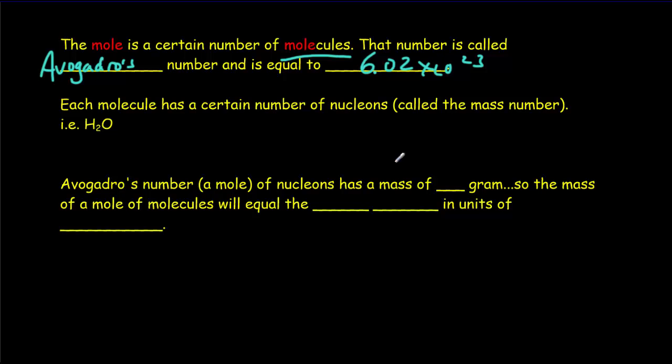And it's equal to this 6.02 times 10 to the 23rd. Now, when we have molecules, there's a certain number of nucleons inside that molecule. So, for instance, with a water molecule, you've got two hydrogens and one oxygen bonded together.